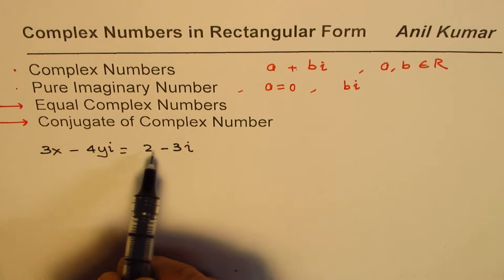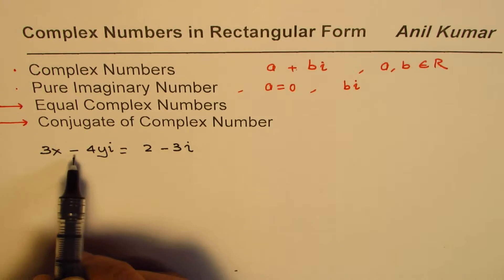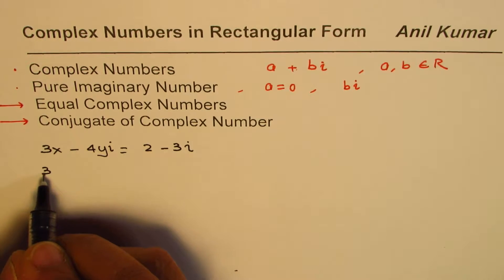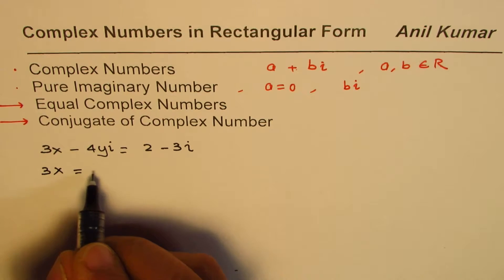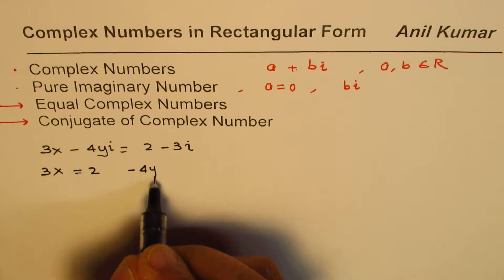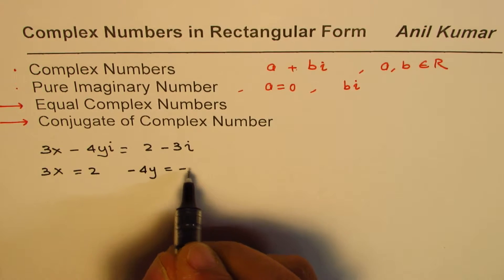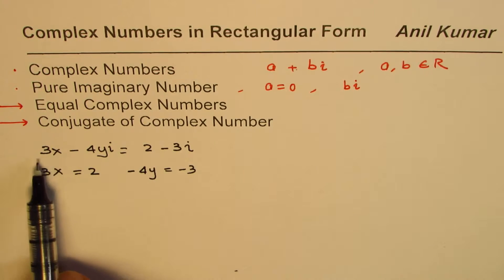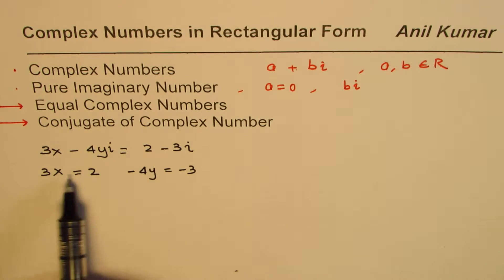Now if these two are equal, in that case the real part, which is 3x, should be equal to 2, and the complex part, which is minus 4y, should be equal to minus 3. So that is what we mean: when two complex numbers are equal, the real parts are equal and their complex parts are equal.